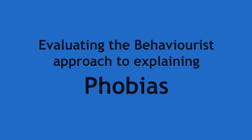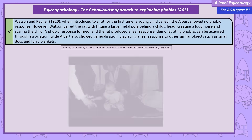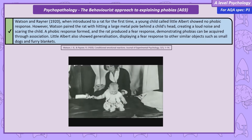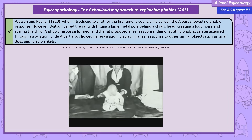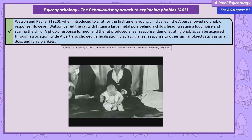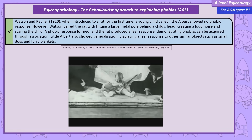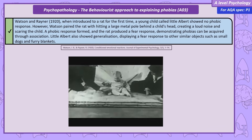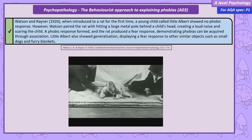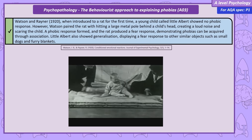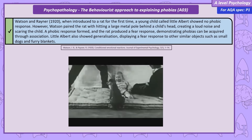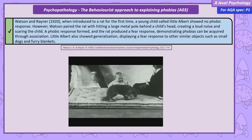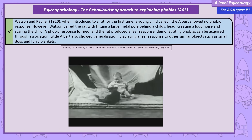Evaluating the behaviourist approach to explaining phobias: the classic research by Watson and Rayner in 1920 is the story of Little Albert. Watson demonstrated that when introduced to a rat for the first time, a young child showed no phobic response. However, Watson paired the display of the rat with hitting a large metal pole behind the child's head, creating a loud noise. This resulted in a phobic response whenever the rat was presented alone, demonstrating phobias can be acquired through association. Little Albert also developed a fear response to similar objects such as small dogs and furry blankets, demonstrating generalisation.